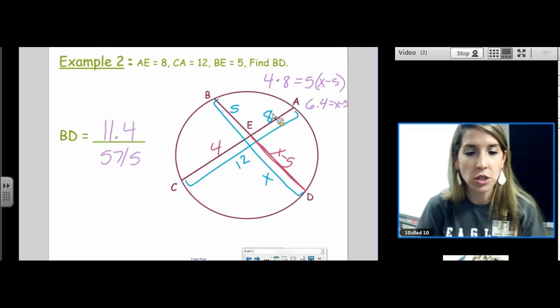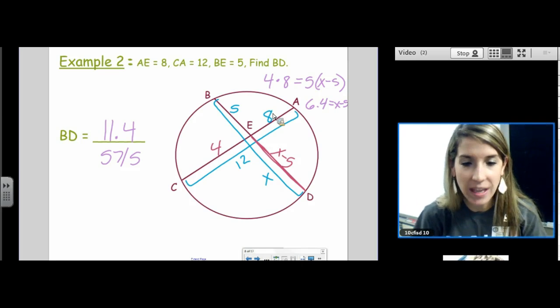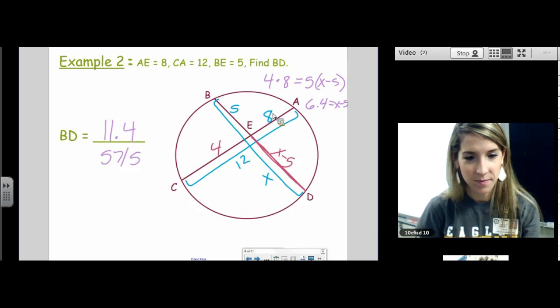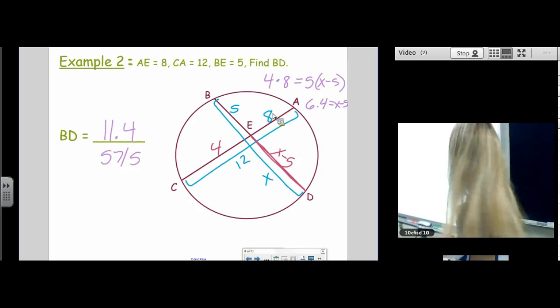We have two options here. You could distribute the 5 or you could just divide by 5. It's totally up to you. So I did 4 times 8 and then I divided by 5. I got 6.4. And then we'll just add 5 to both sides. And so BD is 11.4. You can also put that in fraction form. 57 fifths. Both would be acceptable answers. I would probably go with the decimal one. You should always use fractions unless the decimal ends cleanly. That's a good way to put it.